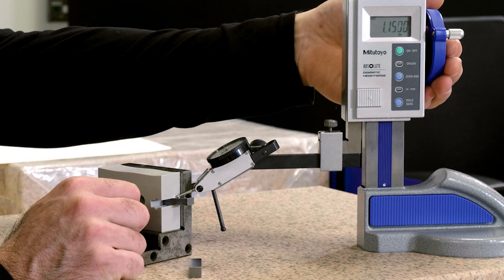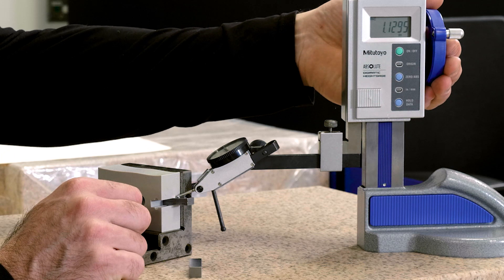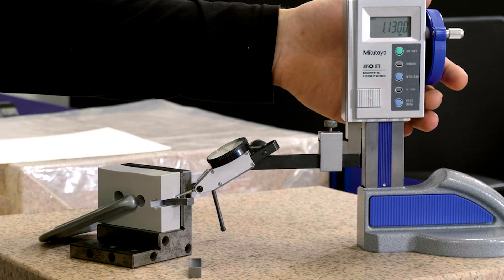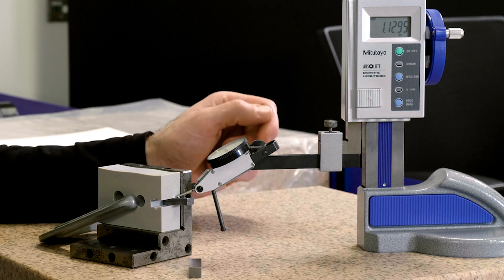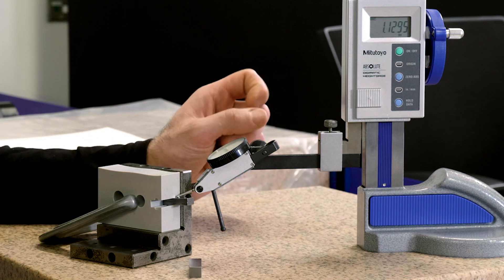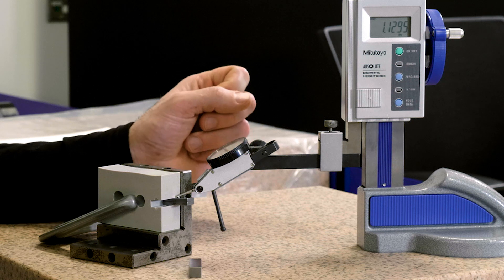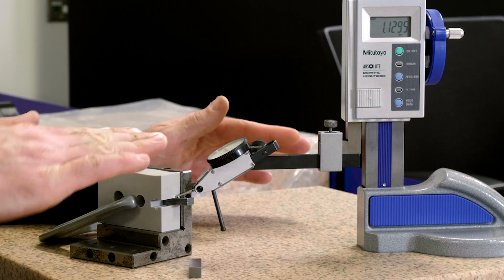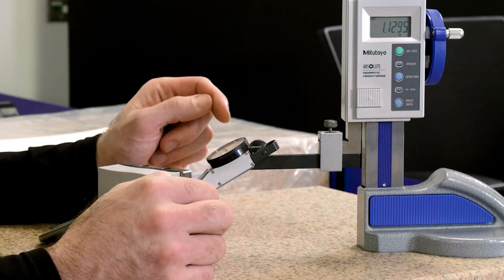I'll take one measurement from here, and we'll see if we get basically what we did before. So we've got 1.129. The previous measure was 1.1275, so we're off by about two thousandths. So we do have some error in the other direction.